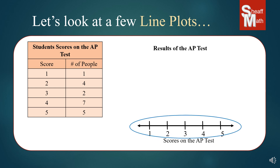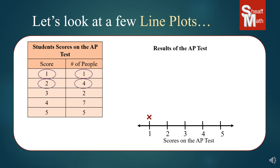And then we have our number line, which contains all of the scores, whether it has a number on the right-hand side or not. So we're going to fill in this line plot. We look at the first row — the number of people that scored a one on the test was one — so we put one X above the score of one. Then we have a score of two; four people got that, so we put four X's in a row.